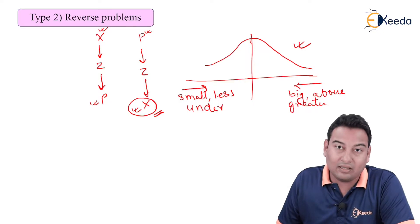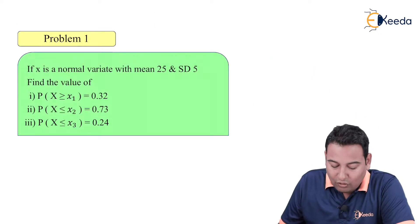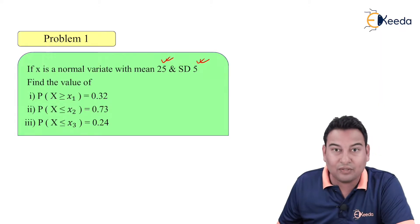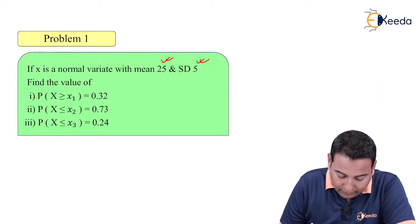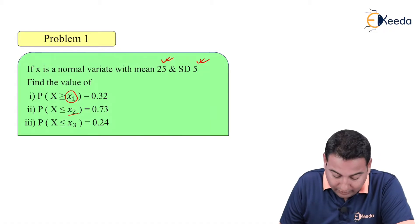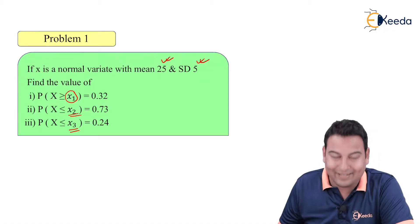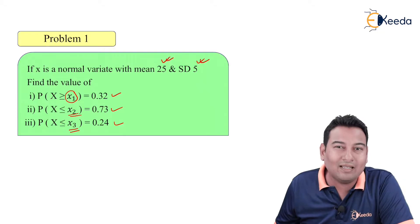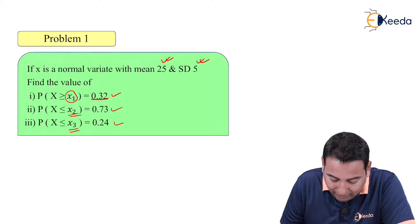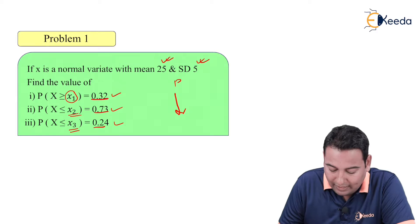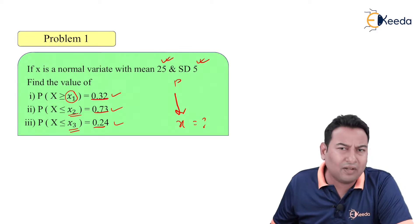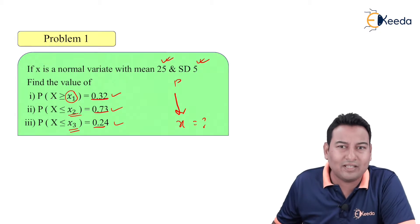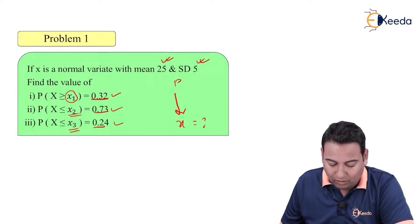Let us discuss the first example of this type. If x is a normal variate with mean 25 and standard deviation 5, find the value of x1, x2, and x3 where the probabilities are 0.32, 0.73, and 0.24 respectively. By looking at the problem it is very clear — probabilities are given and we need to find out x, so it has to be a reverse problem. This is the basic problem, so let us understand how to solve it.